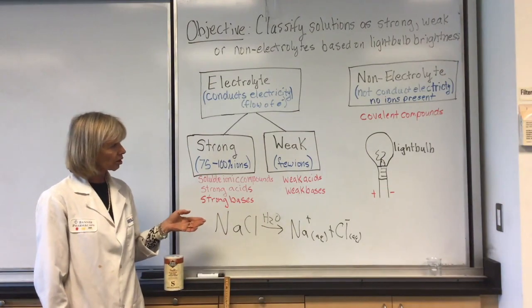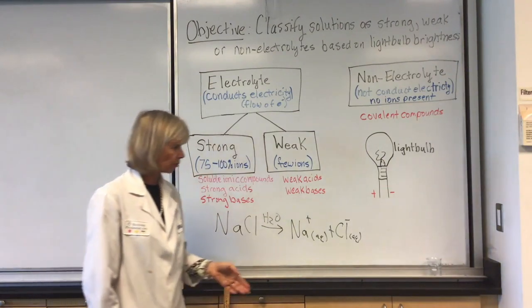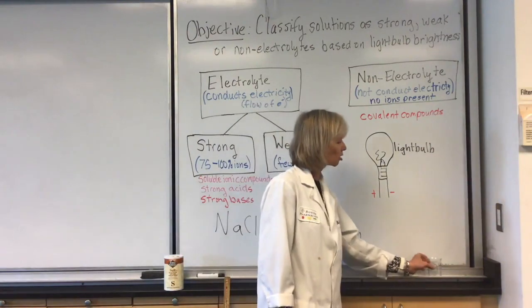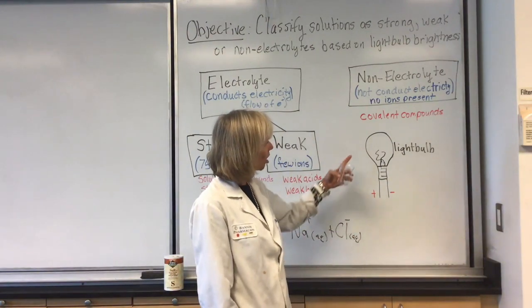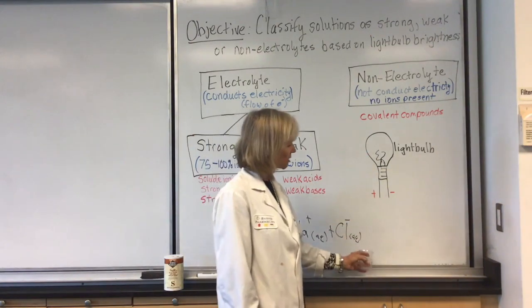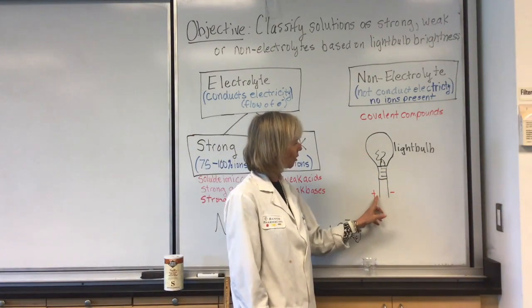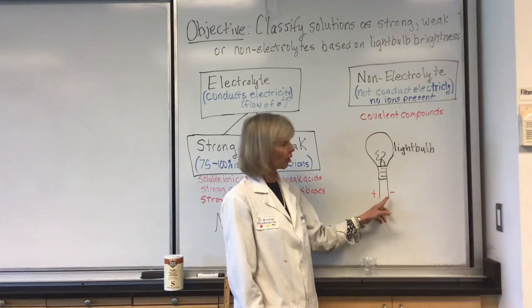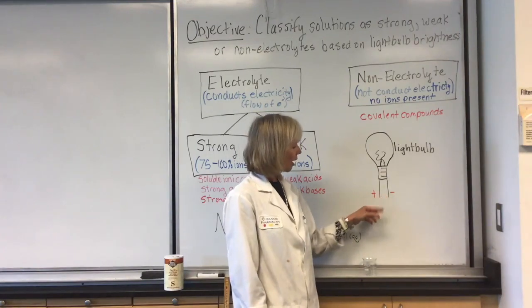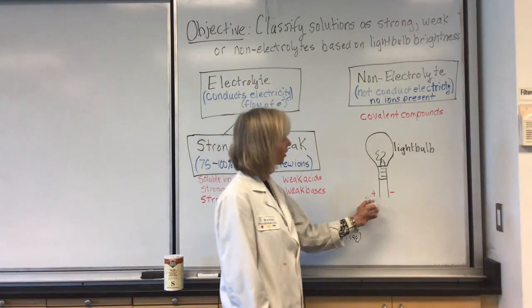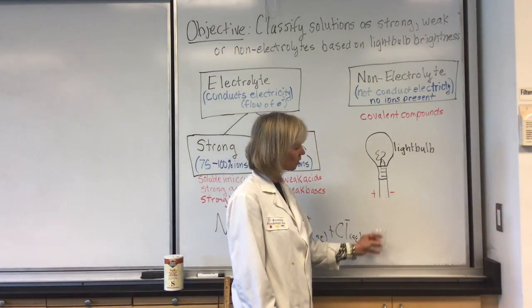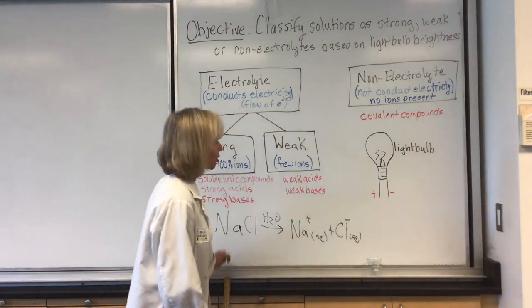How today's experiment is going to work is you're going to take a number of solutions, you're going to test the solutions, see if they have ions present. If they have ions present, our light bulb will light up. You have an apparatus that's set like this. We have a positive and a negative probe, the cathode and the anode. You're going to take your solution, for example, if we had sodium chloride here, and you would put the probes into the solution and see if it would conduct electricity.